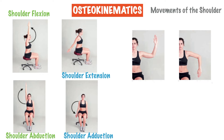Next we have shoulder external rotation, abbreviated as ER, and directly to the right is shoulder internal rotation, abbreviated as IR. To perform internal rotation, start in a position of external rotation and then, using your hand as a guide, turn your arm downward so that it ends up in an internally rotated position. To perform external rotation, start in an internally rotated position and rotate your arm upwards so that it ends up in the externally rotated position.